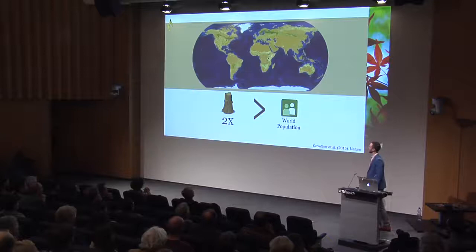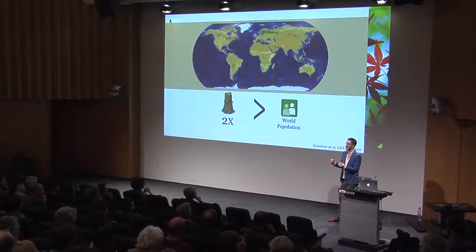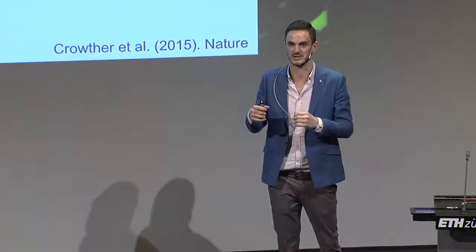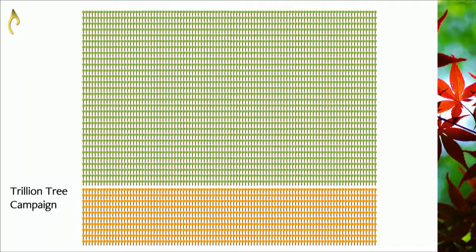So now we all have the answer to a nice pub quiz question. Using a combination of ground-source data and satellite information, we estimated there are approximately 3 trillion trees on Earth. If each tree in a visualization represents a billion trees, you can see the total currently on Earth — and the contribution of the Billion Tree Campaign is great, but not the magnitude of impact they're looking for. So it's now the Trillion Tree Campaign, and when they achieve this, they'll really have a meaningful impact at a global scale.